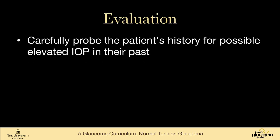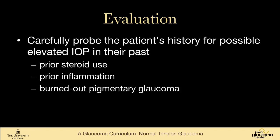They often have visual field loss closer to fixation, which may make them symptomatic earlier. We'd obviously like to catch them before they're symptomatic. As we evaluate these patients, we carefully probe their history for the possibility that they had elevated intraocular pressure in the past — prior oral steroid use, prior inflammation, burned out pigmentary glaucoma. Basically, when we see somebody who has cupping and field loss but a normal intraocular pressure, we're trying to find something else to blame it on.